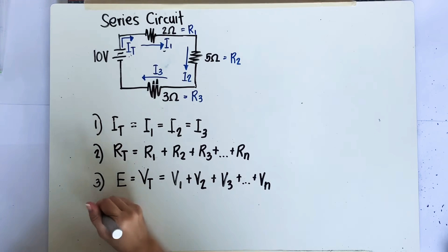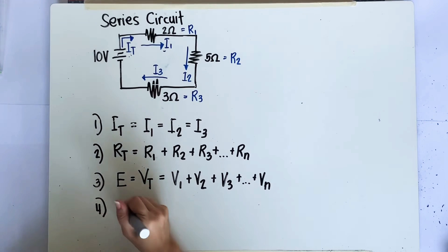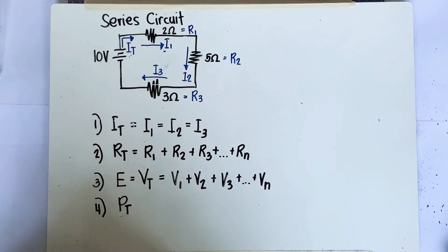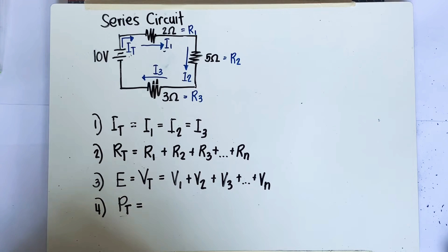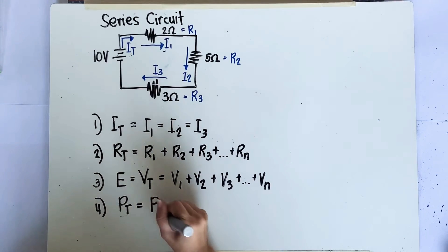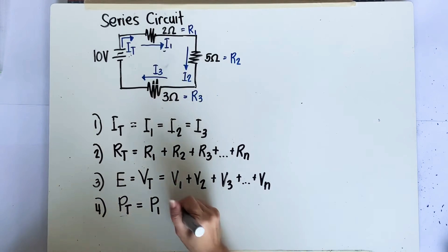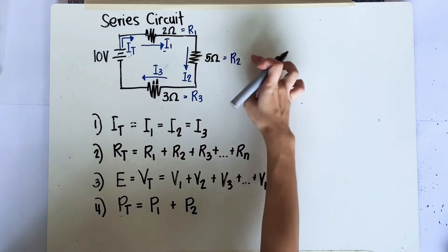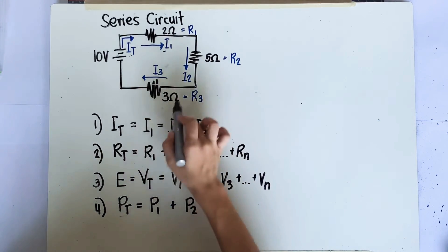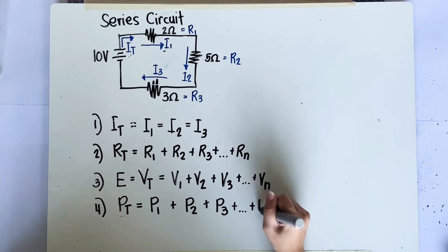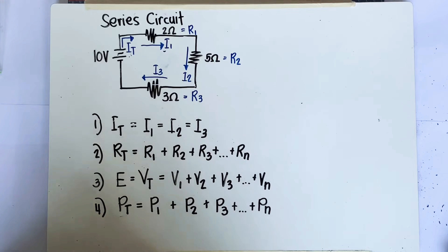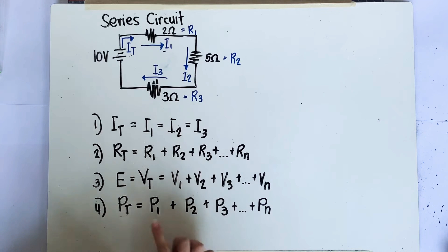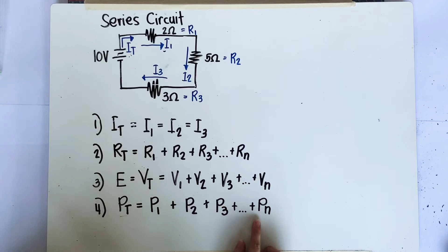For our fourth principle: the total power dissipated in or supplied to the circuit is simply equivalent to the summation of the power absorbed by each of the resistances connected in series. That is P_total = P1 + P2 + P3 and so on. As we recall from our introduction to electricity, power is additive — we simply add the power consumption of each component.